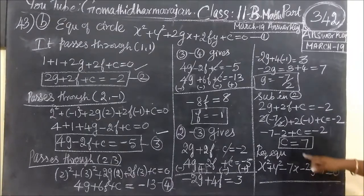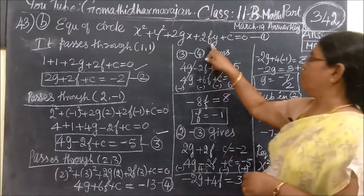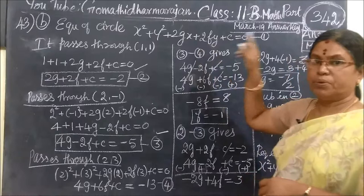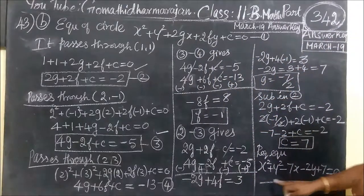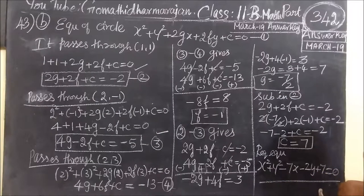And then, 2xF. F1 is minus 1. So, for F equal to, you are substituting minus 1. Then, C equal to 7 substitute. Then, you get the required equation of the circle.